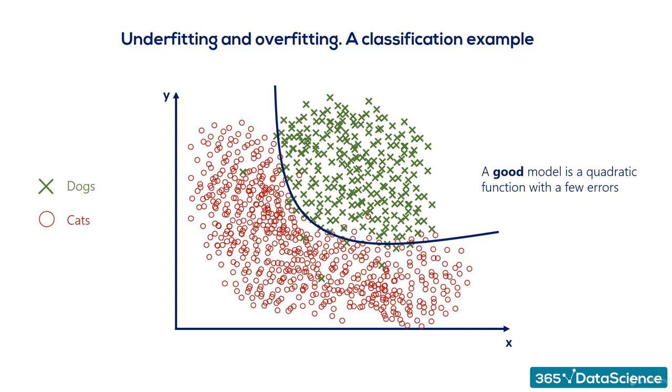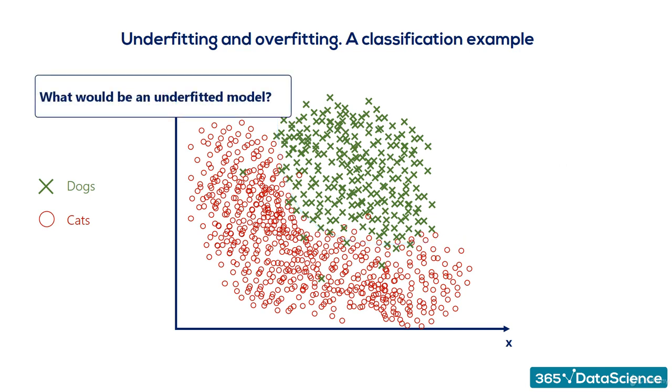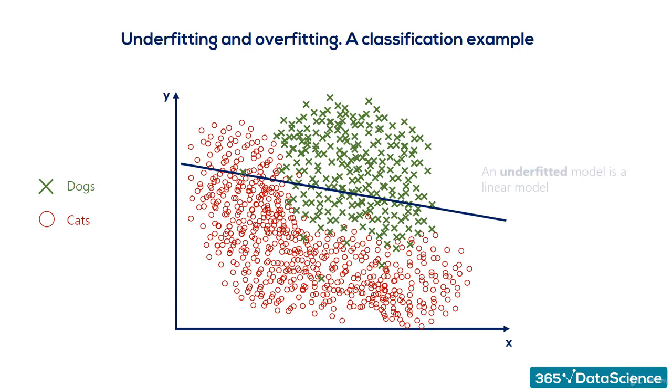Following the logic we saw in our previous example, what would be an underfitted model? Well, of course, a linear model. Linear models are not very smart. Often, a simple linear model underfits if the data is not transformed. Around 60% of the observations would be classified correctly with an underfitted model.